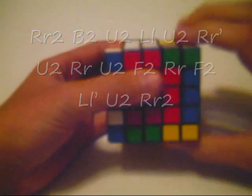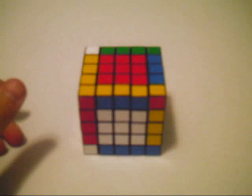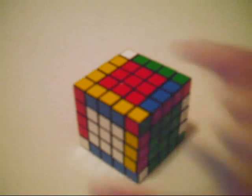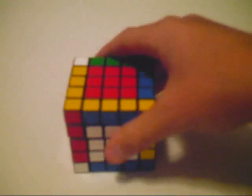And double R2. And what that will do is it will flip it back around so you can solve it just like a 3x3. That should be all the parity cases. There's only two for the 5x5 but they are a pain to solve.